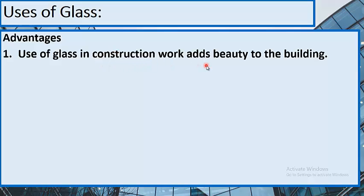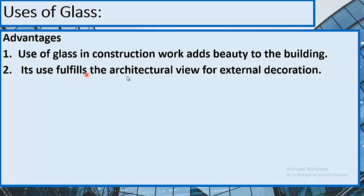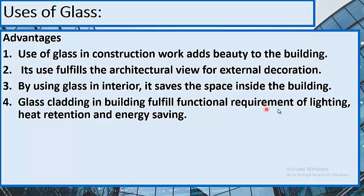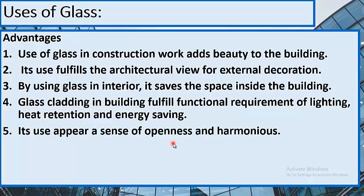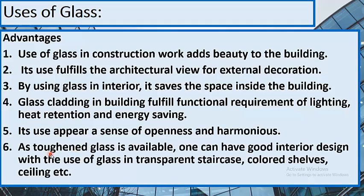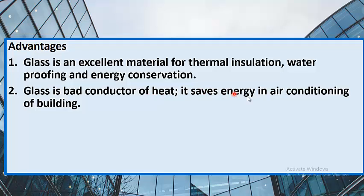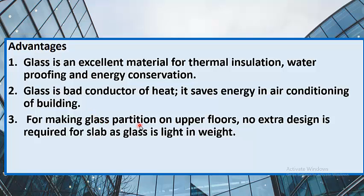Uses and advantages of glass: use of glass in construction adds beauty to the building and fulfills architectural requirements for external decoration. Using glass in interiors saves space inside the building. Glass cladding fulfills functional requirements of lighting, heat retention, and energy saving. It creates a sense of openness. Glass is an excellent material for thermal insulation, waterproofing, and energy conservation. Glass is a bad conductor of heat, saving energy in air conditioning.